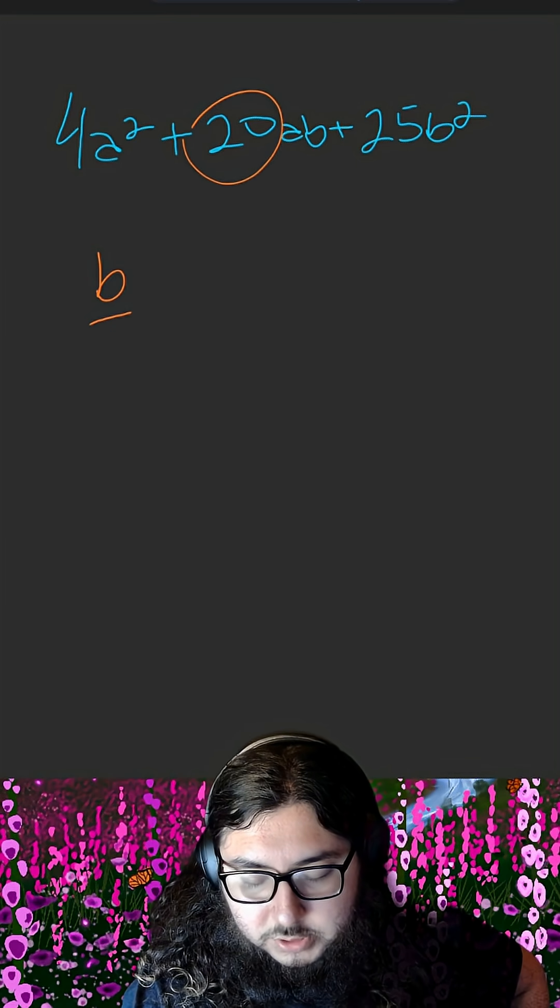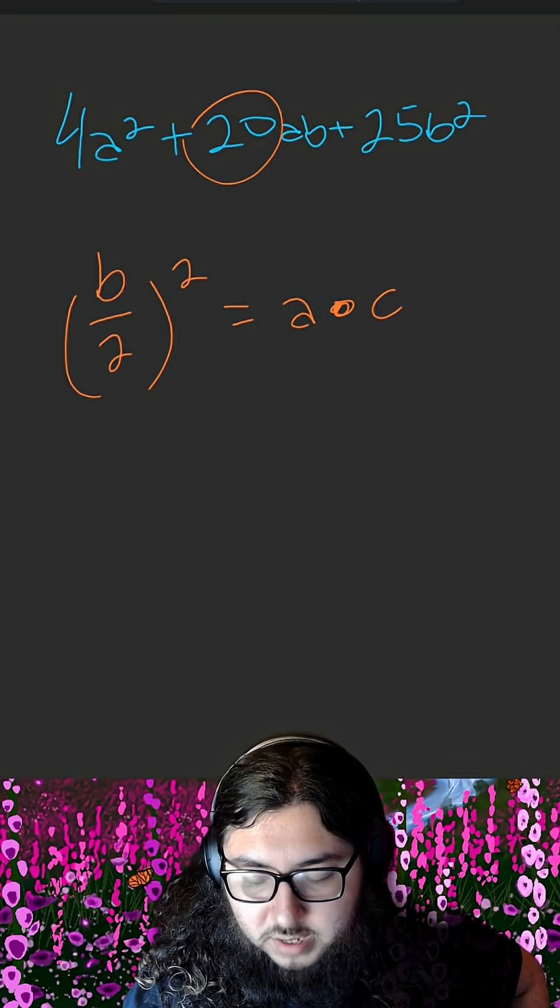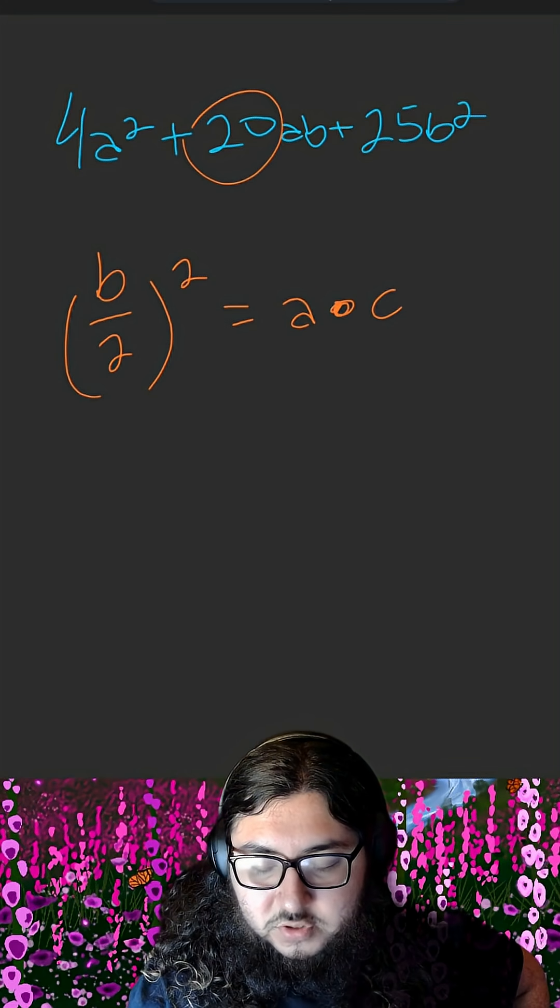If we take B divided by 2 and square that result, that should be equal to A times C. And if that is true, then we have ourselves a square binomial.